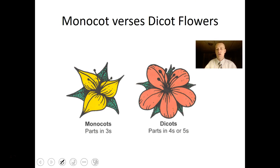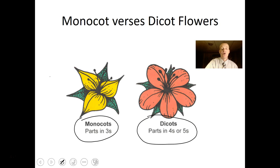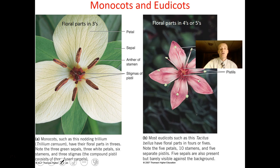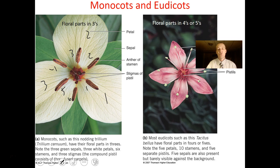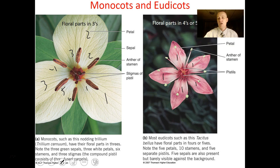In monocot flowers, parts come in threes; in dicots, parts come in fours and fives. You can count three sepals and three petals in a monocot, versus five petals and five sepals in a dicot. In this monocot flower you can see three petals and six stamens — multiples of three. In the dicot flower you can see five parts, and there are eight stamens visible.